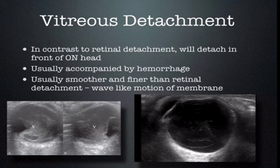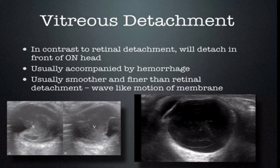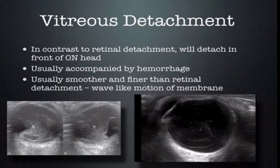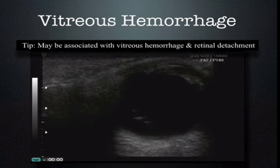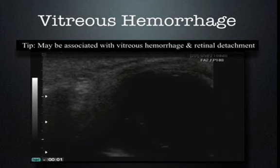A vitreous detachment is really just contraction of the vitreous pulling away from the retina, in distinction to a retina separating from the blood supply of the choroid. You generally have hemorrhage with both retinal and vitreous detachment, so you cannot use hemorrhage alone to distinguish them. Vitreous detachment is not really a membrane — it's generally finer and smoother than a retinal detachment and is not as hyperechoic as the retina. It will still retain wave-like motion similar to a retinal detachment. Here we have a very thin, not-so-hyperechoic line that does not follow an anatomic plane and is going across the optic nerve — there is probably vitreous hemorrhage here.